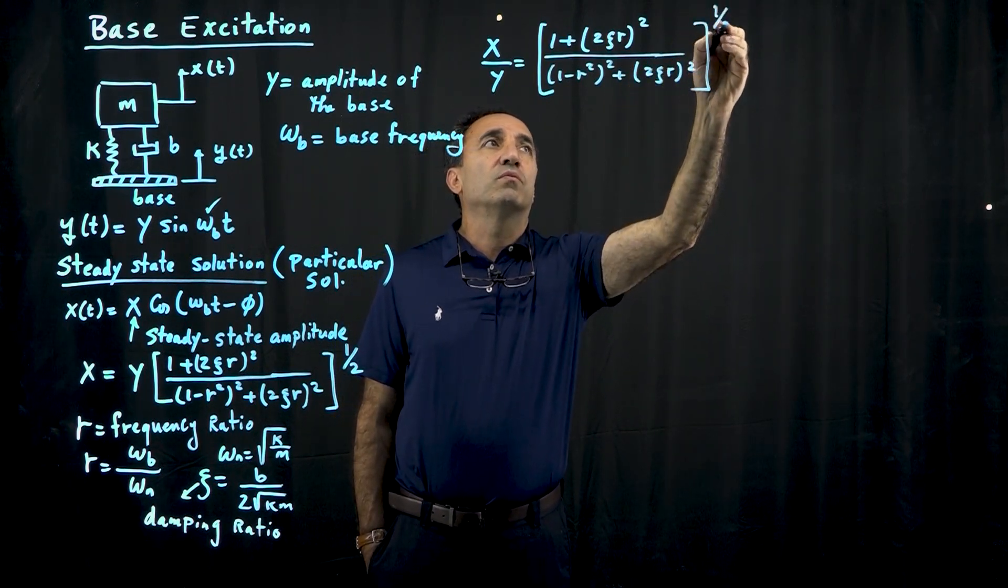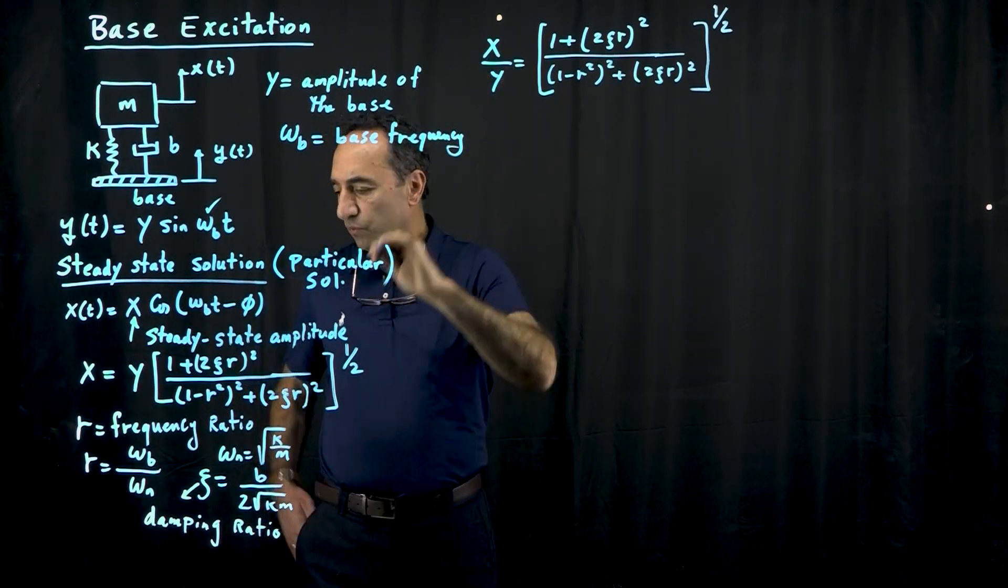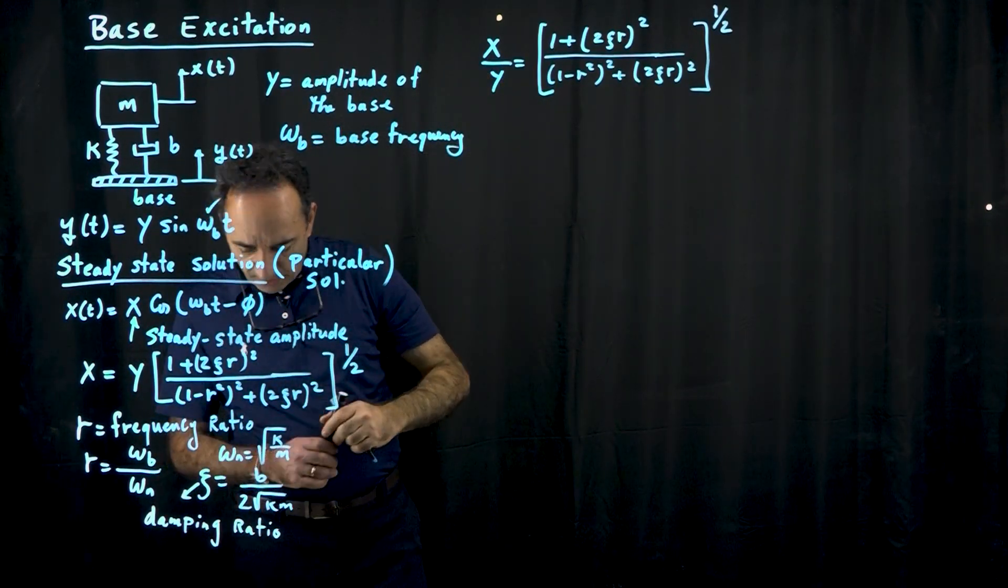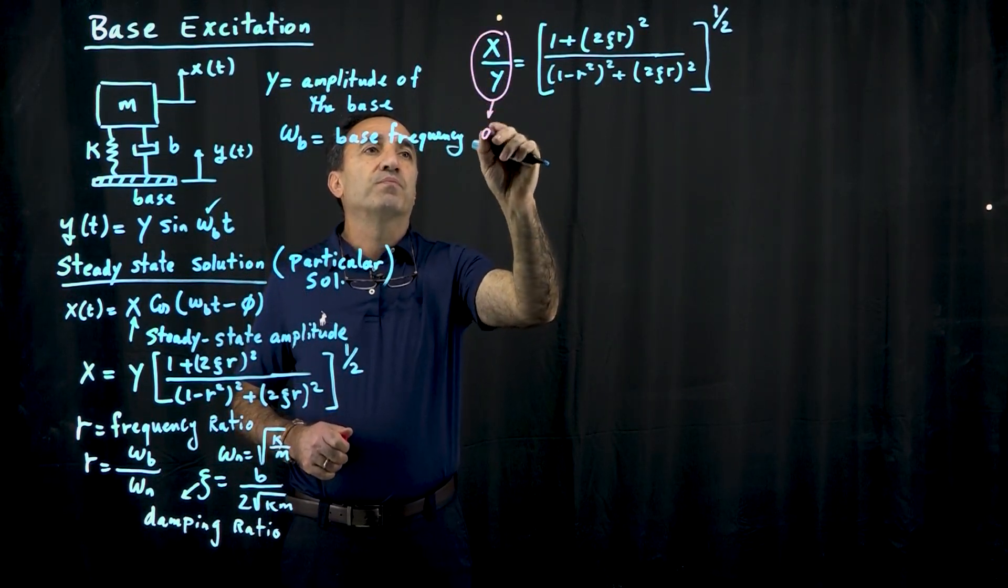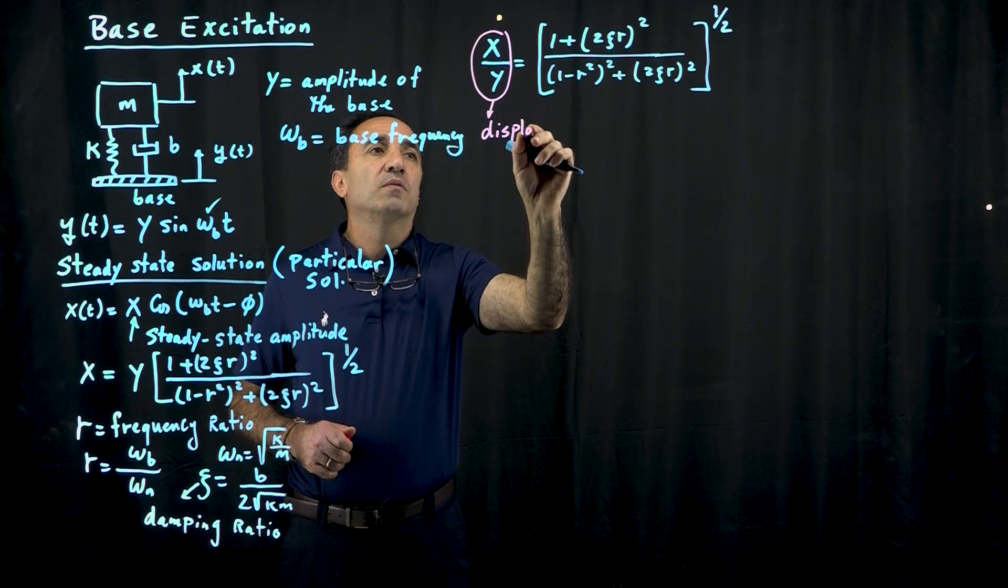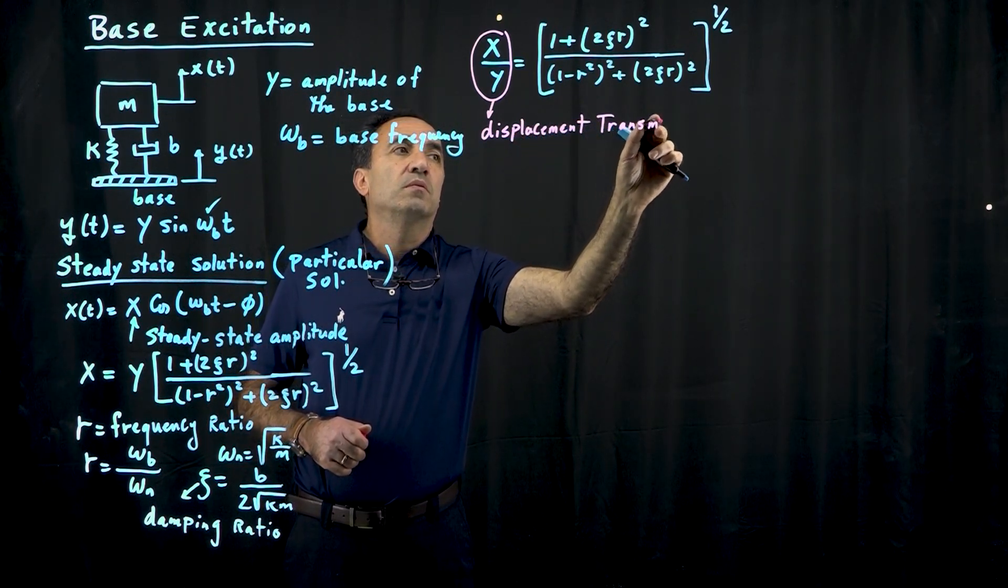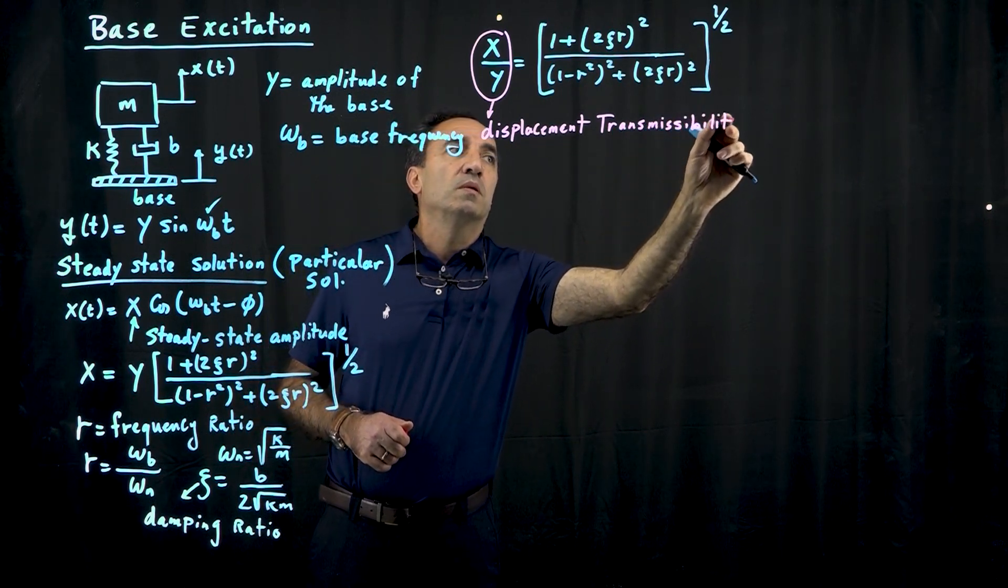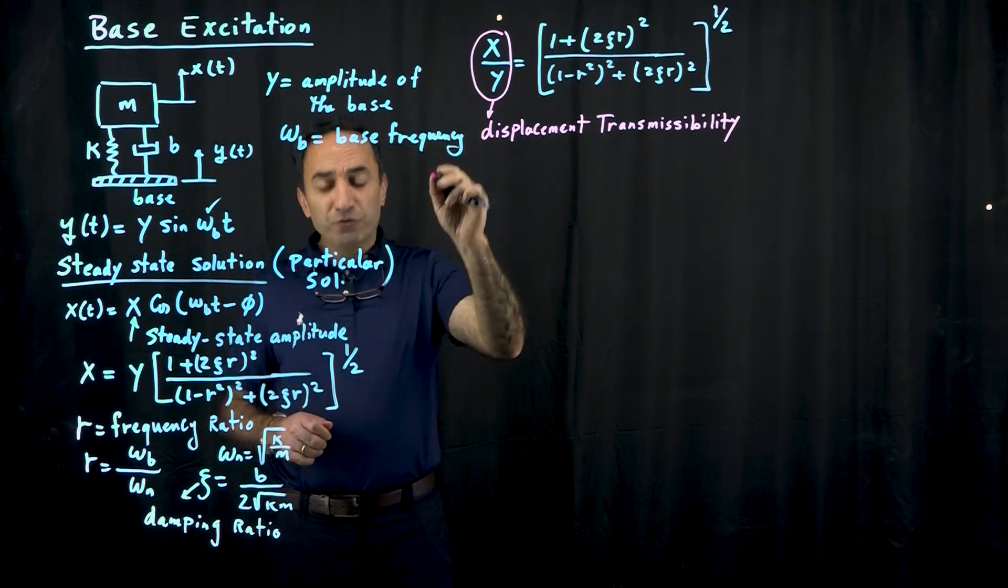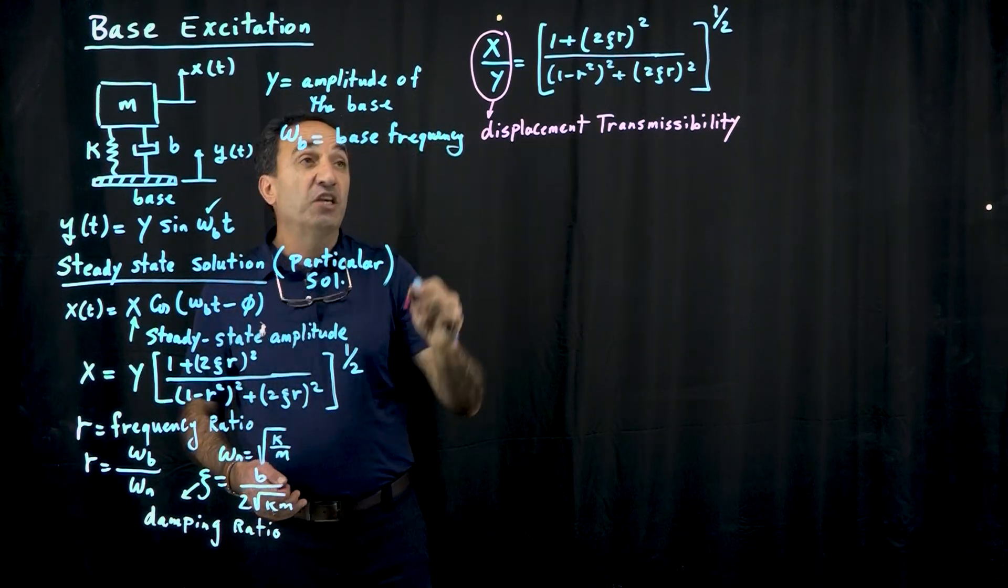And remember, this whole thing is raised to power 1 half. This ratio of x over y is referred to as the displacement transmissibility, also known as, other names for it, is the amplification factor.